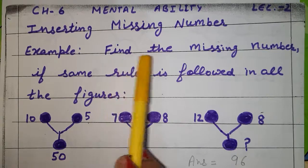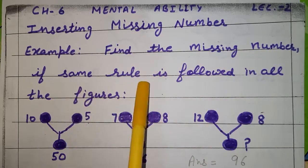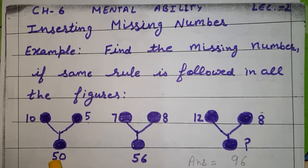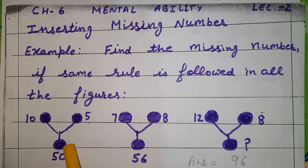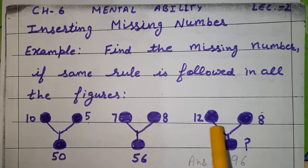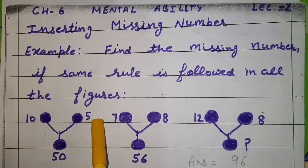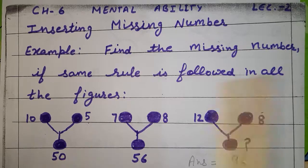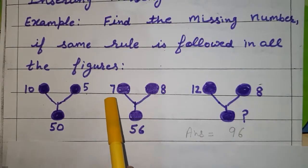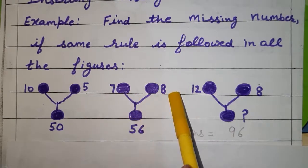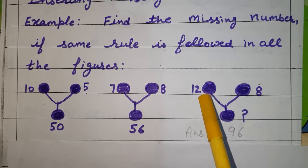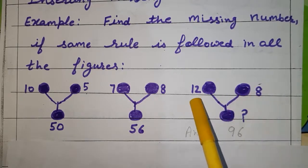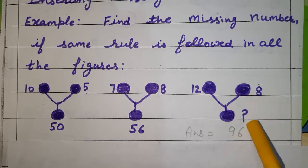For example, find the missing number if the same rule is followed in all the figures. Three figures are given. We have to find which rule is followed in the 1st and 2nd figure — the same will be followed in the 3rd. Here 10 and 5 are written: 10 × 5 = 50. Now 7 and 8 are at the top: 7 × 8 = 56. Now 12 and 8 are at the top: 12 × 8 = 96. So here at the bottom we write 96.